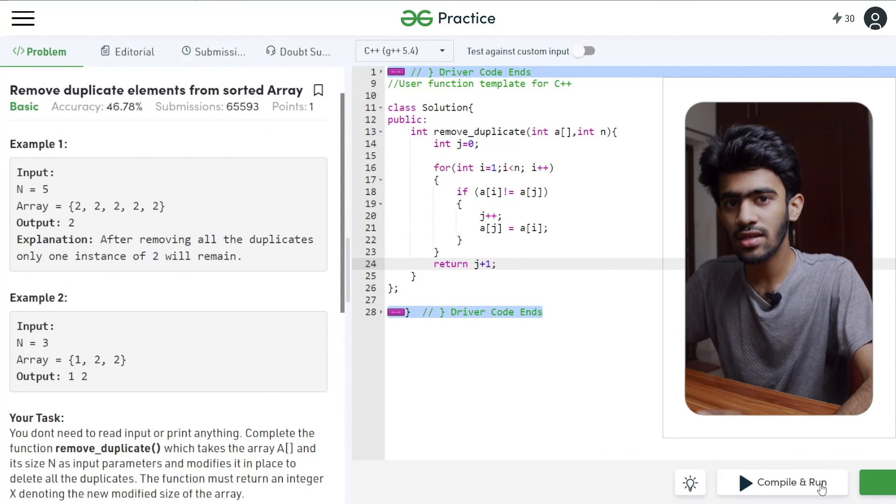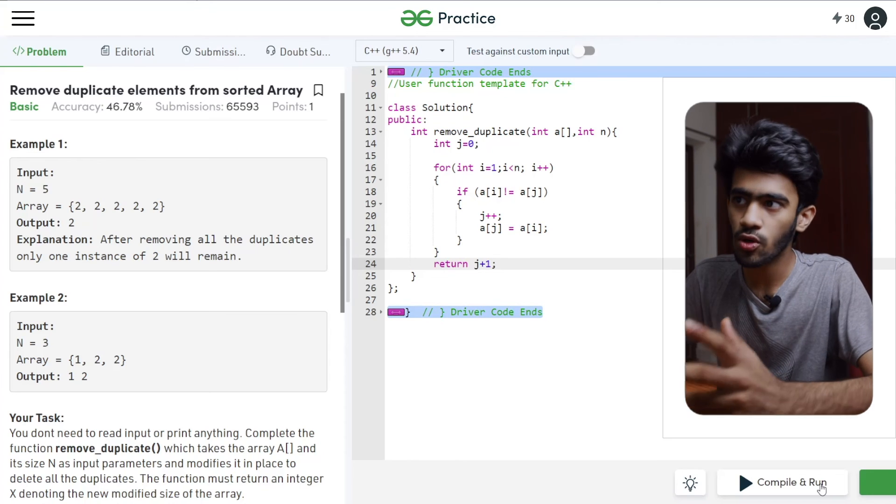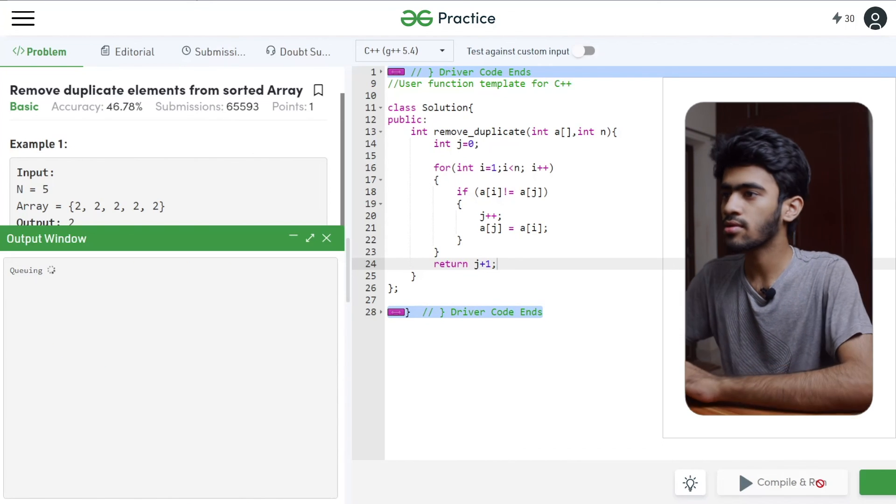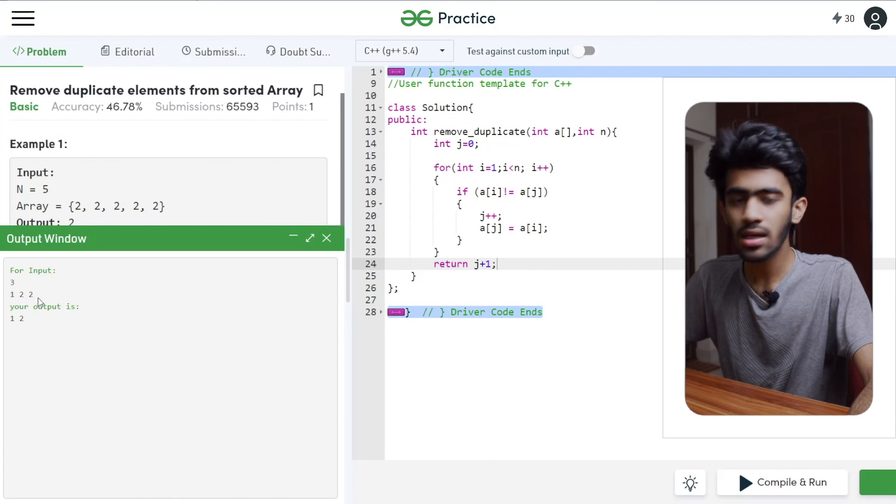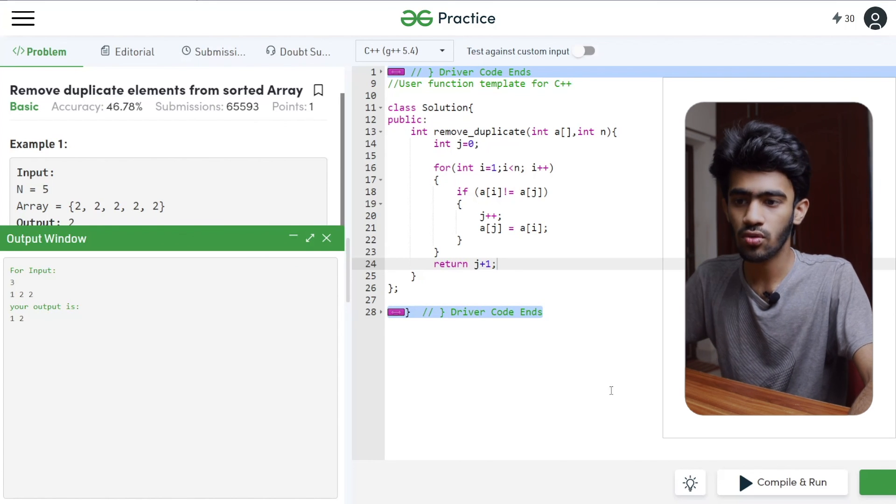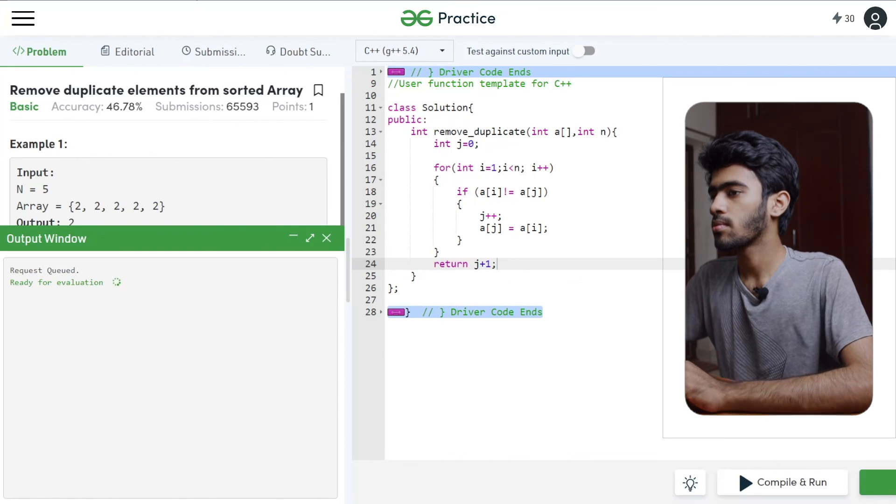We return the length of the sorted array after removing duplicates. So the compiler will return the value of the sorted array. So 1, 2, we will return the value of the sorted array and 2 will be removed. So let's submit. Correct answer.